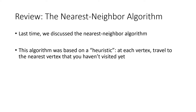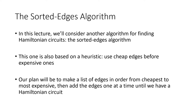The nearest neighbor idea was that at each vertex we travel to the nearest vertex we haven't visited yet. Today we're talking about the sorted edges algorithm — same basic idea of using a common sense approach to get a good solution to our Hamiltonian circuit problem, even if it's not the best solution. This time the common sense idea is to use the cheapest edges we can. We'll make a list of edges sorted from cheapest to most expensive and try to use those cheapest edges to construct our circuit.